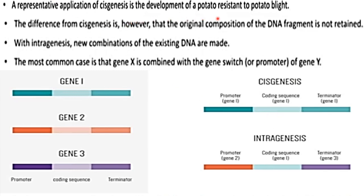One example of cisgenesis is its application in the development of potato resistance to potato blight disease.